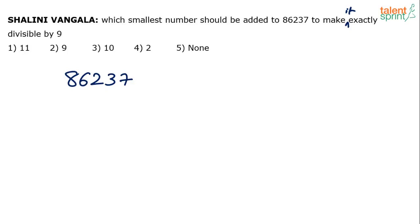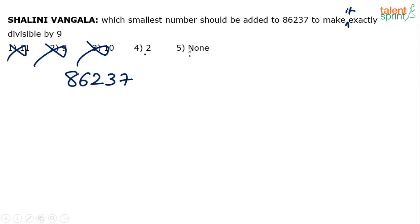Even before we look into the solution method, options 1, 2, and 3 cannot be the answers to this question. The answer should either be option 4 or option 5. So if you are in a hurry and ready to take a chance, you should blindly mark either option 4 or option 5, because options 1, 2, and 3 are incorrect — impossible answers.